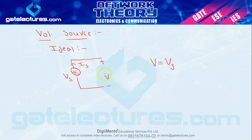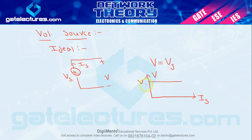Matlab jo voltage aapka external circuit ko milne wala hai wo source current par depend nahi kar raha. Tab yeh aapka kehlata hai ideal voltage source. Agar main simply ek graph draw karun ideal voltage source ka — V versus Is — to yeh graph hamesha constant rahega. Is ke respect mein hamesha iska value Vs hogi, Is par depend nahi kar rahi. To yeh aapka kehlata hai ideal voltage source.